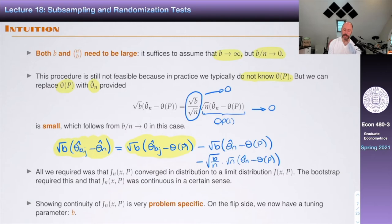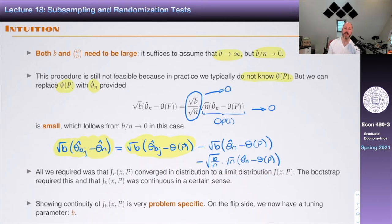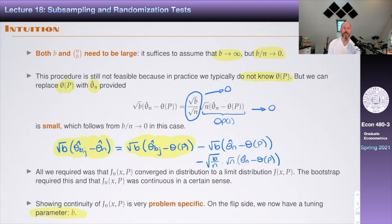The bootstrap required convergence plus continuity of the sampling distribution. Showing continuity is problem-specific and typically hard to show — sometimes people use the bootstrap out of faith because it's unknown whether the conditions hold. For subsampling, the requirement is minimal: just that whatever you're using has a limiting distribution. On the flip side, subsampling introduces a tuning parameter b, which is not easy to choose in practice. Provided you have a good choice of b, subsampling works under minimal conditions.